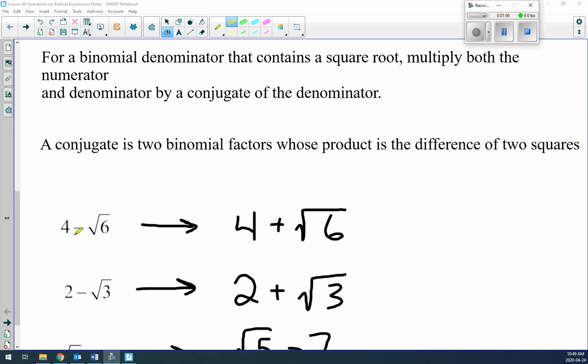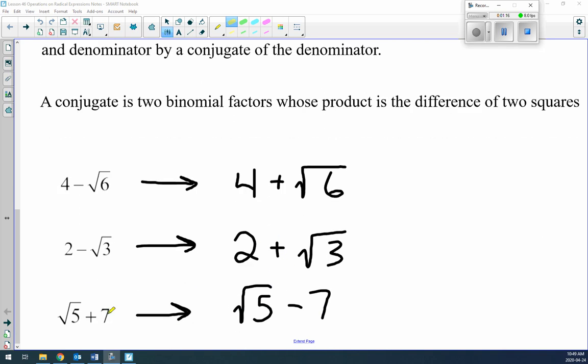The conjugate is exactly the same as the original. The only difference is the sign in the middle. So if this was a subtraction, the conjugate is a positive. If this was an addition, then it's a subtraction. 4 minus root of 6, the conjugate is 4 plus root of 6.